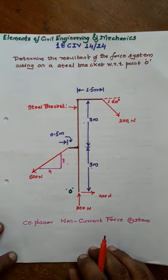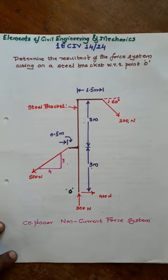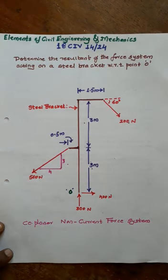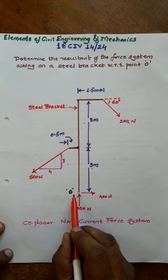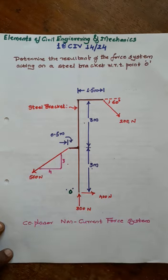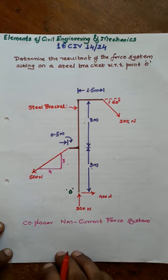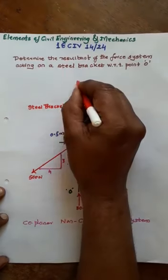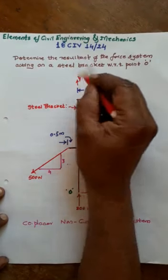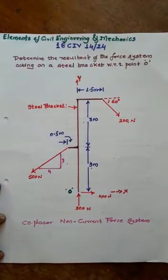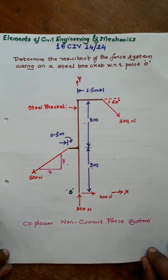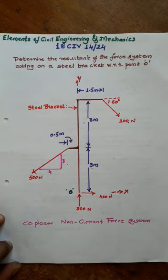Similar to the concurrent force system, we choose a convenient coordinate axis. It is given that O is the reference point, and we have to find the location of the resultant R with respect to O. We set the x-axis and y-axis accordingly. Next, we resolve each force into its horizontal and vertical components, and for that we need the angle made by each force.